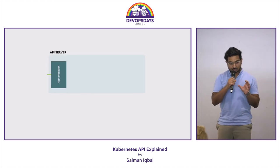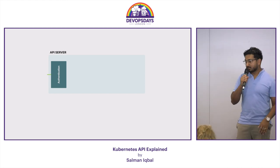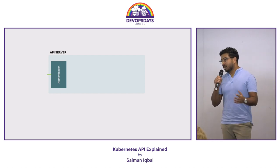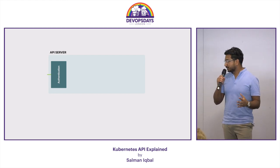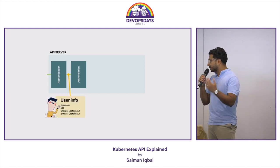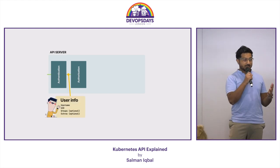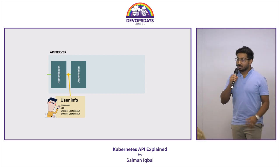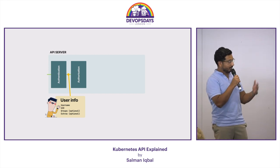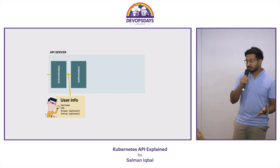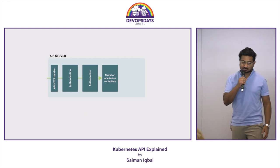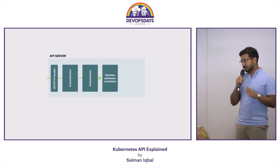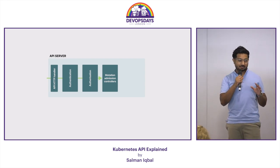I know it sounds boring but it will get interesting in a second. Inside the API server it's not just one component — it's multiple. The first is authentication: are you allowed to even come into the cluster? There's no internal mechanism; you have to connect it with an external system like OpenID Connect. Once authenticated, some information about you gets sent to the next component, which is authorization — so you've gotten into the cluster, but can you do what you're trying to do?